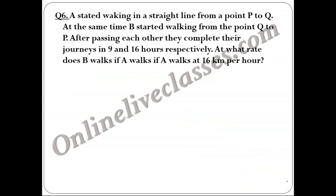Question 6 is a very standard question — only numerical values change. A started walking in a straight line from P to Q. At the same time, B started walking from Q to P. After passing each other, A took 9 hours to reach Q, and B took 16 hours to reach P. A walks at 16 km/hr. Find B's speed.